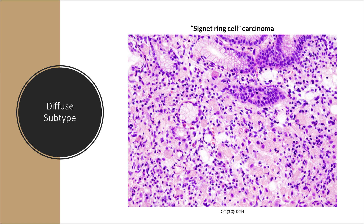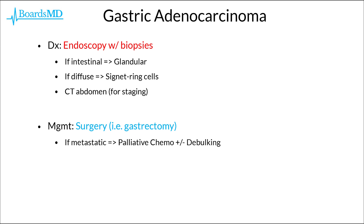There is also a classic histopathology for the diffuse subtype: the signet ring cells. In this image you can see these mucin-filled cells in the middle, whereas the nuclei have moved to the periphery of the cell, thus resulting in a signet ring appearance. For this reason, the diffuse subtype of gastric adenocarcinoma is sometimes referred to as signet ring cell carcinoma.